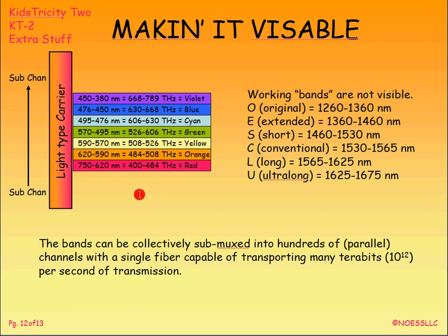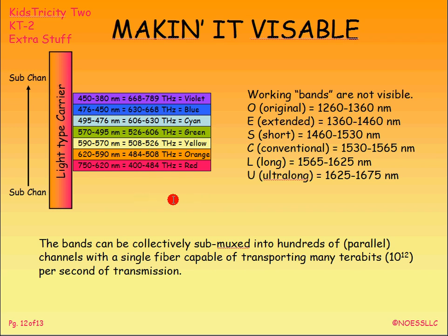But as I said, you can't actually see this. What you really have are what are known as bands — not visible, at least not to anybody but Superman. These are the O, E, S, and other bands — 6 bands for our commercial systems. And just like our radio and carrier systems on wire, we can subdivide these channels further.